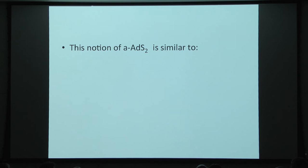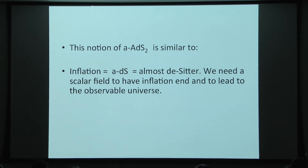Finally, some general comments. One message is that we should think about both AdS_2 and CFT_1 together — there is no AdS_2/CFT_1 correspondence in the strict sense, but there should be an almost AdS_2, almost CFT_1 correspondence, in the sense that we have these symmetries, almost, slightly broken. This notion appears in other places. For example, inflation is an almost de Sitter space, and we really need to have a scalar field to end inflation and lead to inflationary observables — they don't make sense if inflation hadn't ended. We really need to break the de Sitter symmetry.